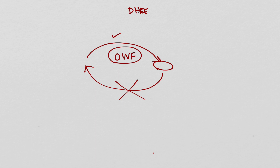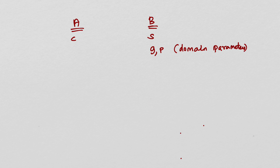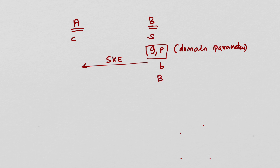Diffie-Hellman key exchange uses what is called the discrete logarithm problem. We will talk about the mathematics behind this in another episode. In Diffie-Hellman key exchange, I have Alice and Bob. Alice acts as the client and Bob acts as the server. At the very beginning, Bob decides two parameters called G and P. These are called domain parameters. He decides these parameters and transports them in a special message called server key exchange. He also generates his own public-private key pair, calculating his public key B = G^b mod P using that formula.